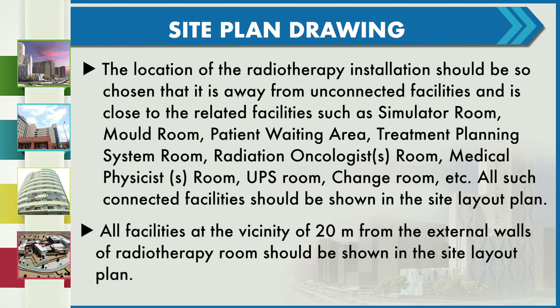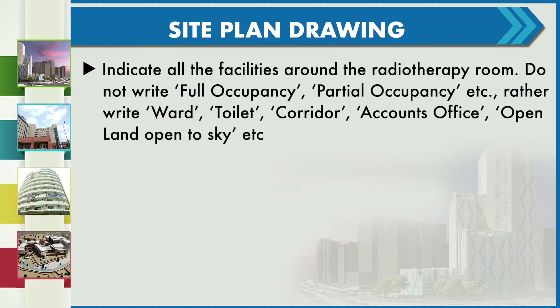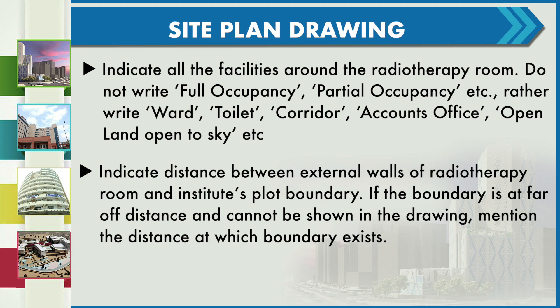All facilities within the vicinity of 20 meters from the external wall of the radiotherapy room should be shown in the site layout plan. We need to indicate all facilities around the radiotherapy room — do not write full occupancy or partial occupancy; rather, write ward, toilet, corridor, accounts office, etc. in the drawing. We also need to indicate the distance between the external wall of the radiotherapy room and the institute's plot boundary. If the boundary is at a far distance and cannot be shown in the drawing, we need to mention the distance at which the boundary exists.